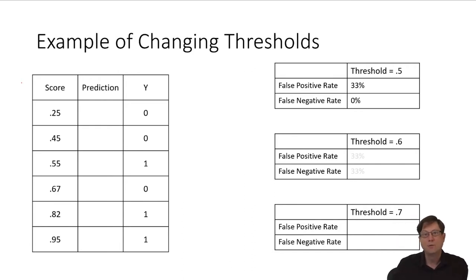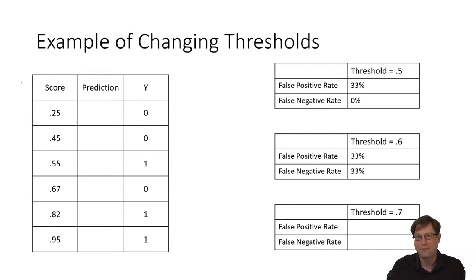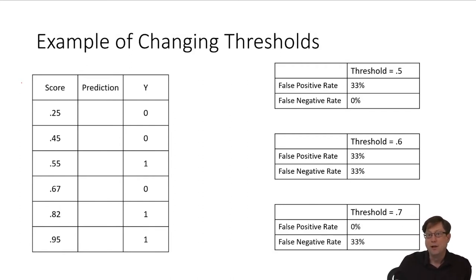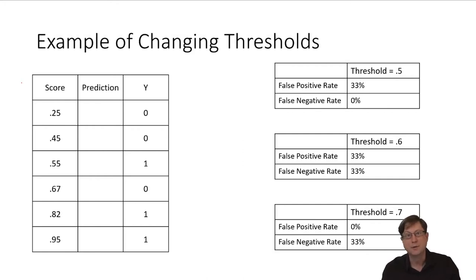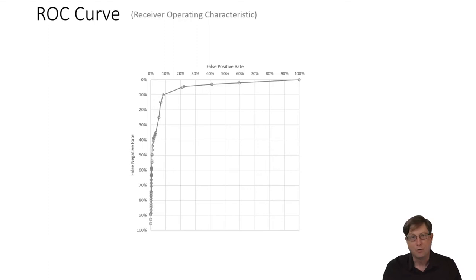With a threshold of 0.6, it's kind of totally worse — you have the same false positive rate and a higher false negative rate, so you wouldn't want to deploy that. But the 0.7 threshold allows you to get rid of all your false positives in exchange for some false negatives. It's a simple example to work through and see the mechanics. You don't do it by hand in practice — that's what computers are for.